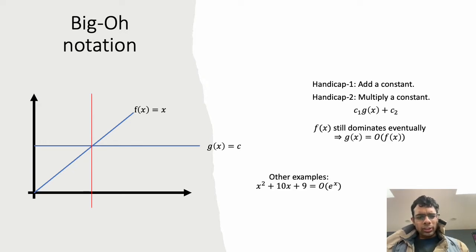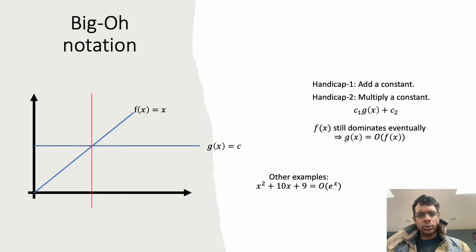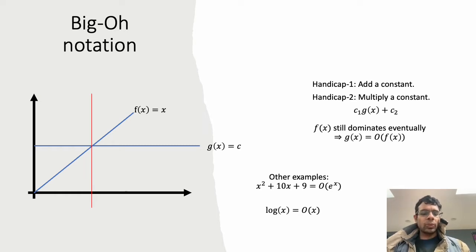Other examples: take any polynomial — a quadratic or cubic function — it's going to be dominated by an exponential; the exponential will cross it eventually. Take a logarithmic function, which is the inverse of the exponential, and any polynomial is going to dominate it, the simplest being just x.